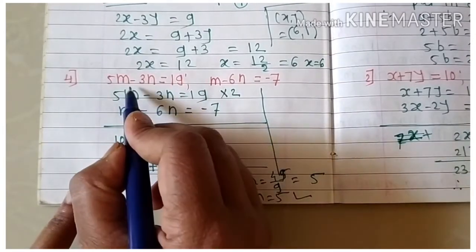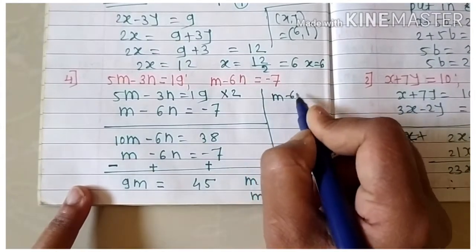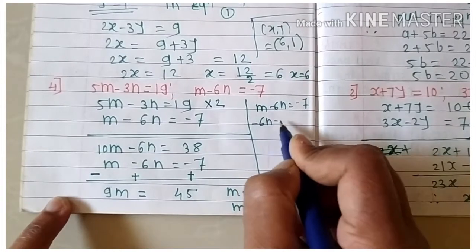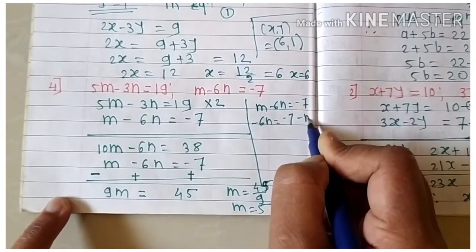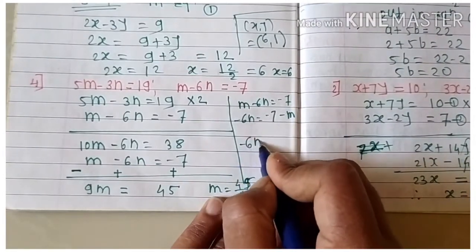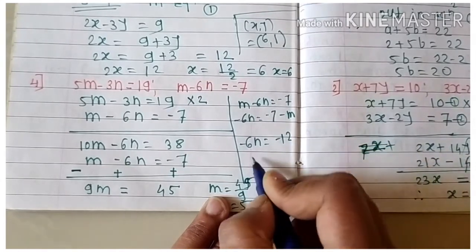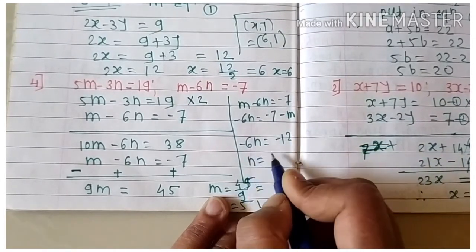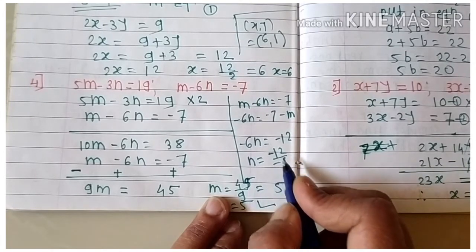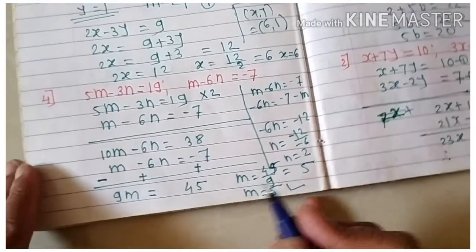Substitute m equals 5 into equation two: m minus 6n equals minus 7, so minus 6n equals minus 7 minus 5 equals minus 12. Therefore n equals minus 12 divided by minus 6, which is positive, giving n equals 2. The solution is m equals 5 and n equals 2.